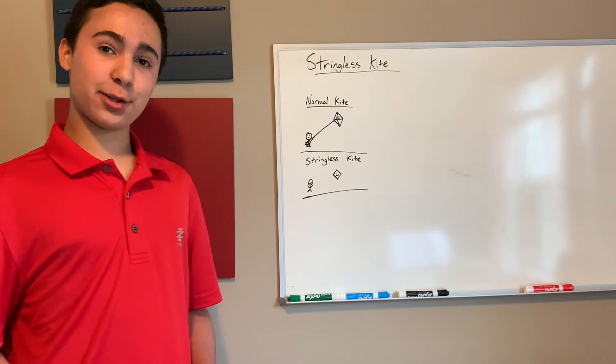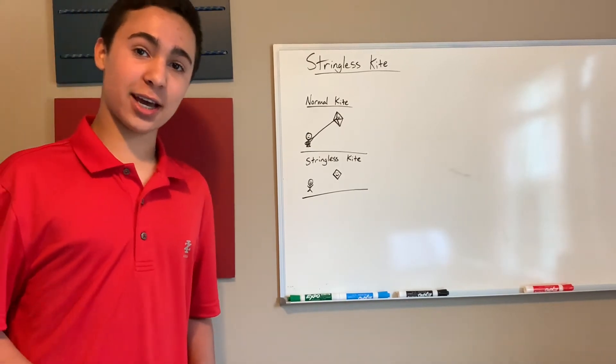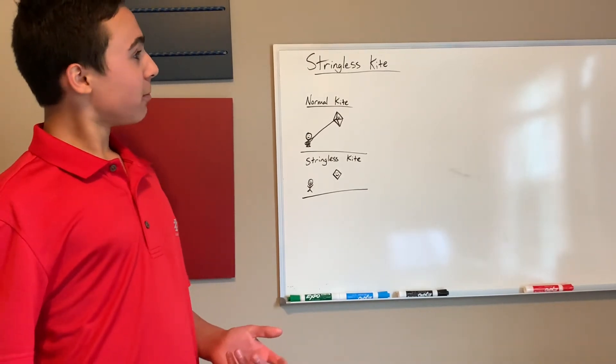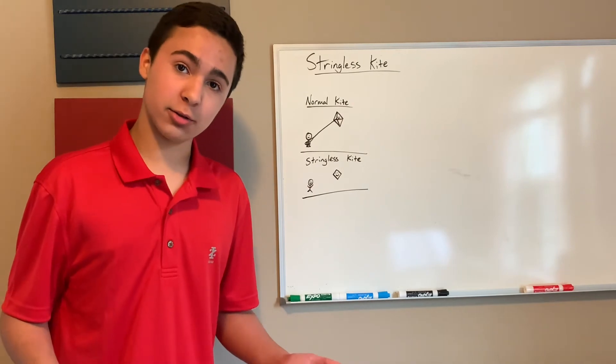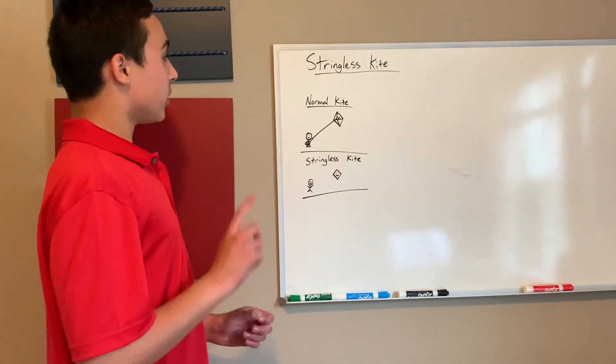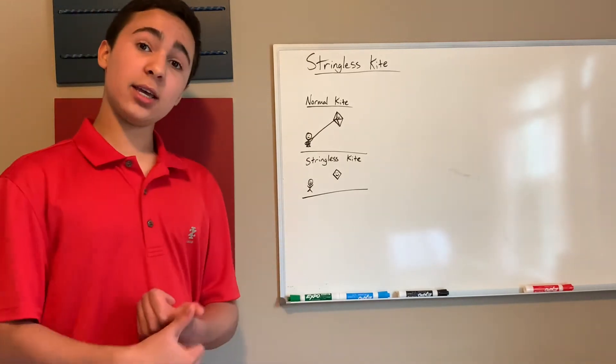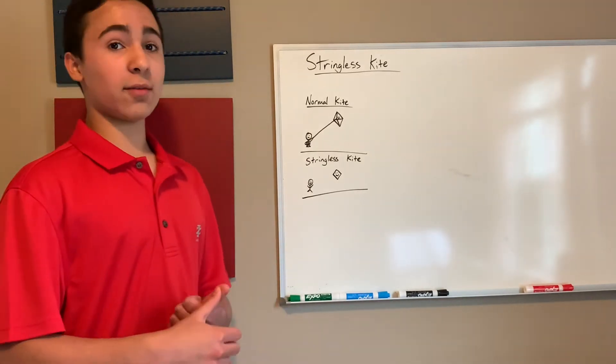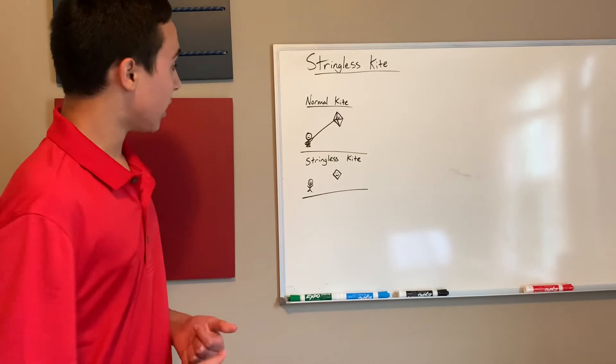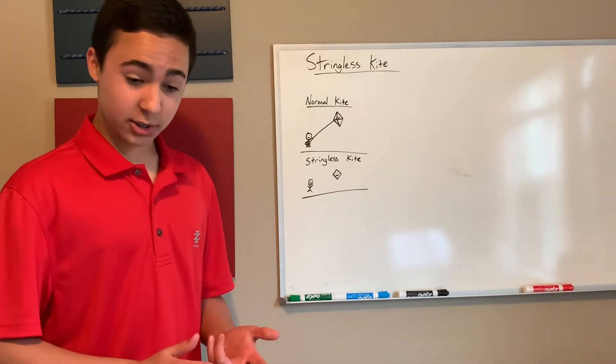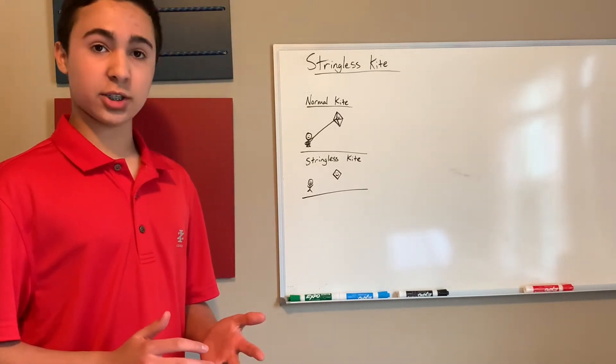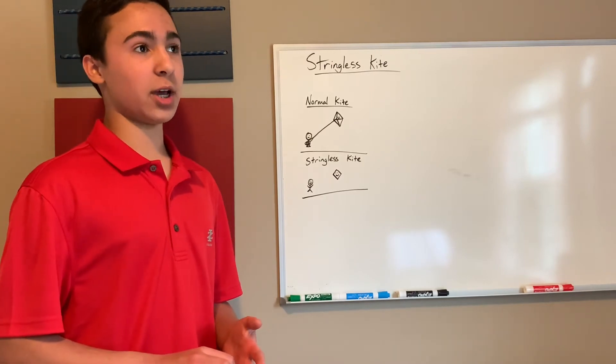Another nifty invention that we have created is the stringless kite. Now, why might you want a string with this kite, you ask? Well, I'll tell you. Number one, a normal kite has a string. Now, that string is A, hard to clean up because you have to ravel it all in, B, it can get all raveled around you, which can cause serious injuries such as loss of circulation to certain parts of the body because it's wrapped too tight.